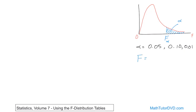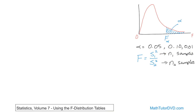The test statistic we'll use is the ratio of the sample variance of population one over the sample variance of population two. That's why the tables reference a numerator and denominator. The sample variance in the numerator came from N1 samples; the denominator came from N2 samples. So you need to know how many samples you drew from each population, and use those to read values off the table.